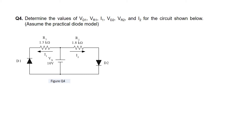In this circuit there is only one voltage source Vs in the center. The current from the positive terminal of this voltage source will come out and be split up into two branches, giving a current of I1 as well as I2. The current I1 that travels towards diode D1 will be blocked by D1, hence diode D1 will be reverse biased.